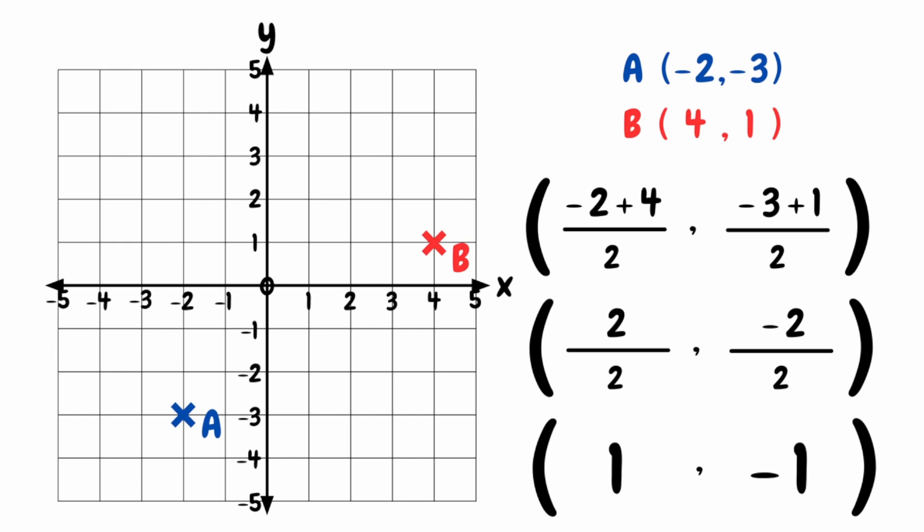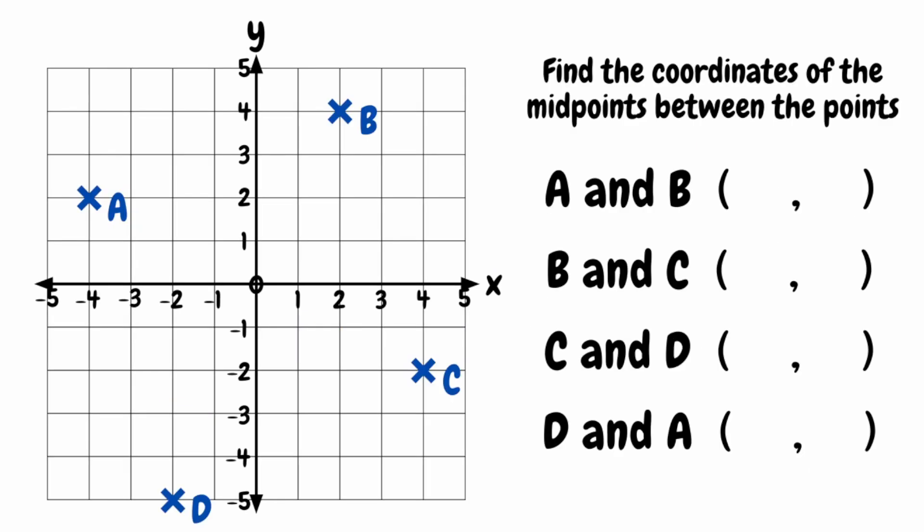So the coordinates of our midpoint between the points A and B would be 1, negative 1, which I've marked on the grid with the letter M. Now that we know how to use our midpoint formula, we can take a look at a few more examples. Feel free to pause the video here, grab a pen and paper and have a go at these, and we'll go through the solutions in just a few moments.